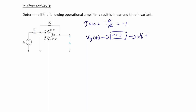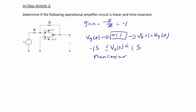When you send vg(t) through the function, v0(t) equals negative vg(t). However, there is something important with operational amplifiers: the power supply is plus and minus 15 volts, so you will never get an output greater than 15 or less than negative 15, because that would yield saturation. So in general, this is a non-linear system because for certain inputs the output is always going to be 15 or negative 15.